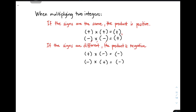Now if we multiply two negative integers — negative times negative — the product is positive, because the rule says if the two integers have the same sign, their product is positive. Let's go with the next rule: if the signs are different, the product is negative. So if you have a positive integer multiplied by a negative integer, they have different signs, so automatically the product is a negative number. Just remember: same sign, the product is positive; different sign, the product is negative.